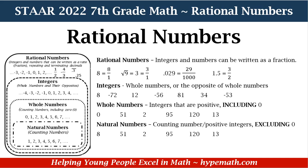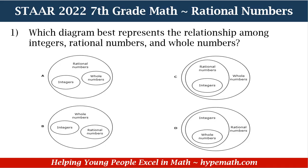Now let's dive into our first problem. It says: which diagram best represents the relationship among integers, rational numbers, and whole numbers? Is it A, where there's a large circle of rational numbers and within that circle are integers and whole numbers? Or is it B, where the large circle is whole numbers and within that are integers and rational numbers? Is it C, where the large circle is whole numbers, then within is rational numbers, and within that is integers? Or D, where the large circle is rational numbers, then within is integers, and within integers is whole numbers.